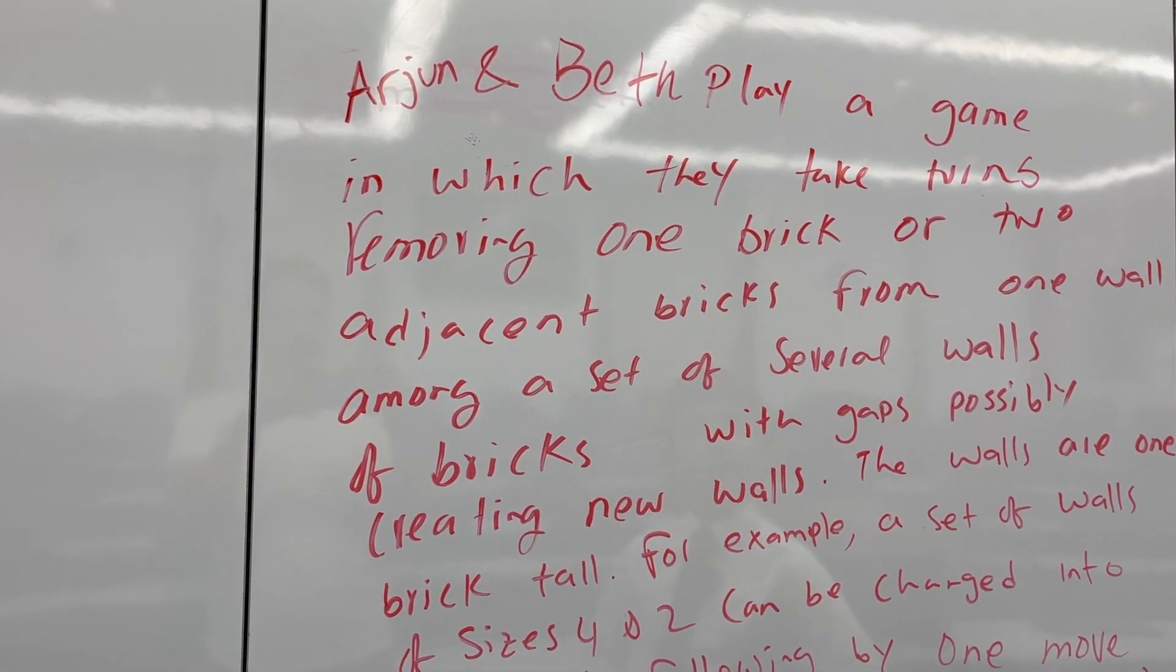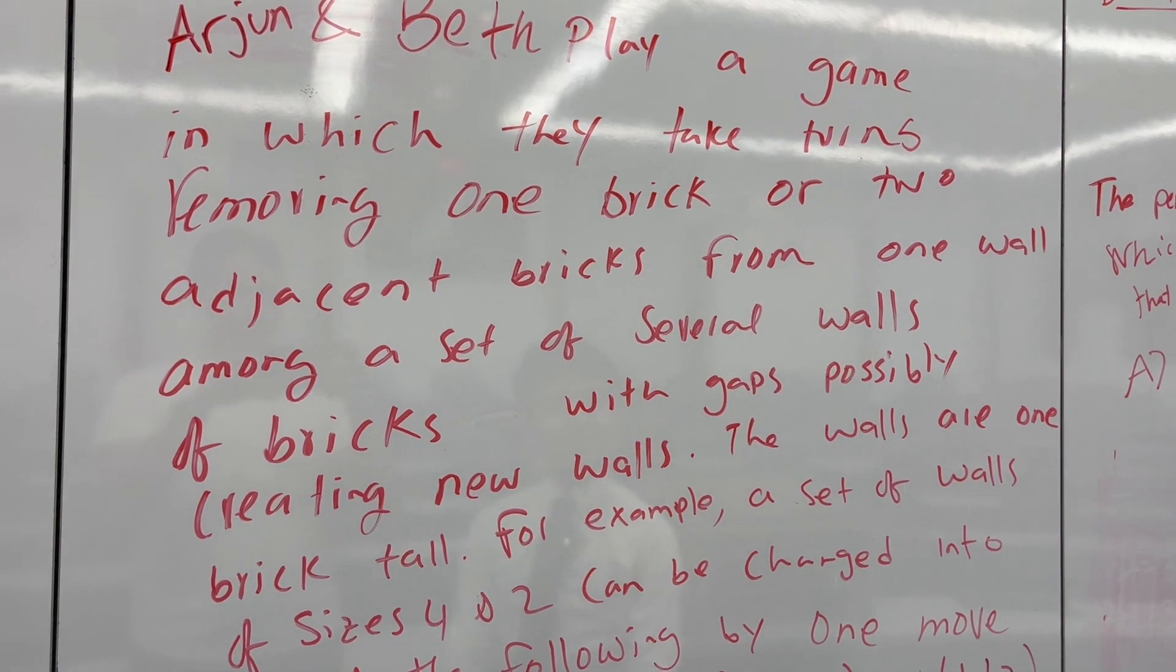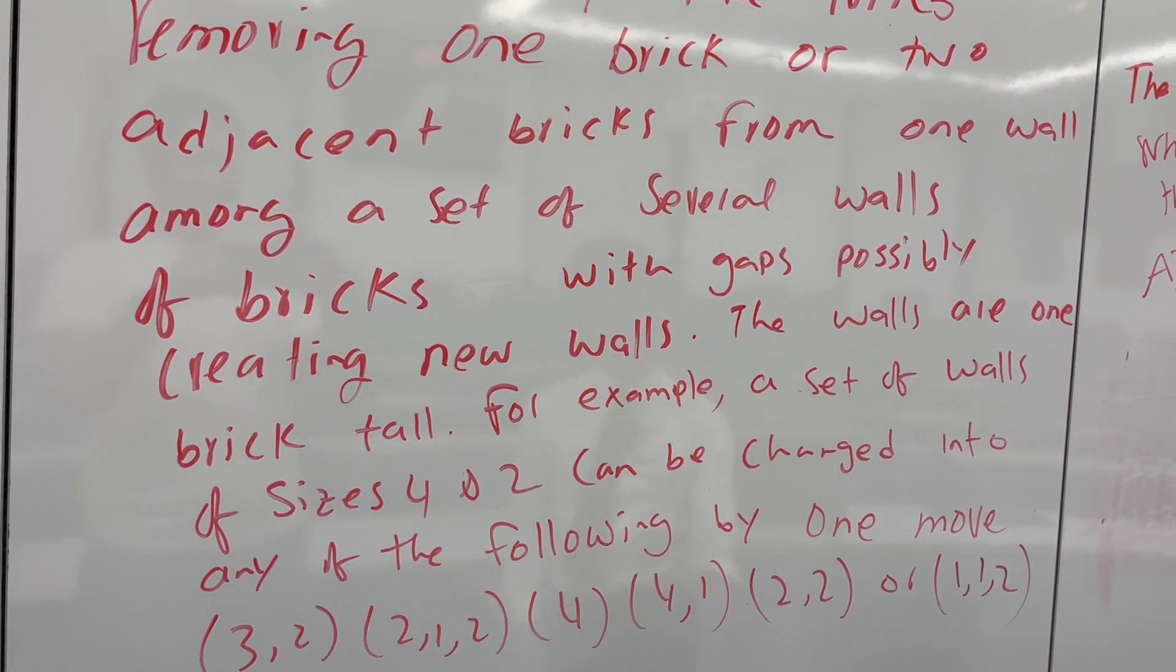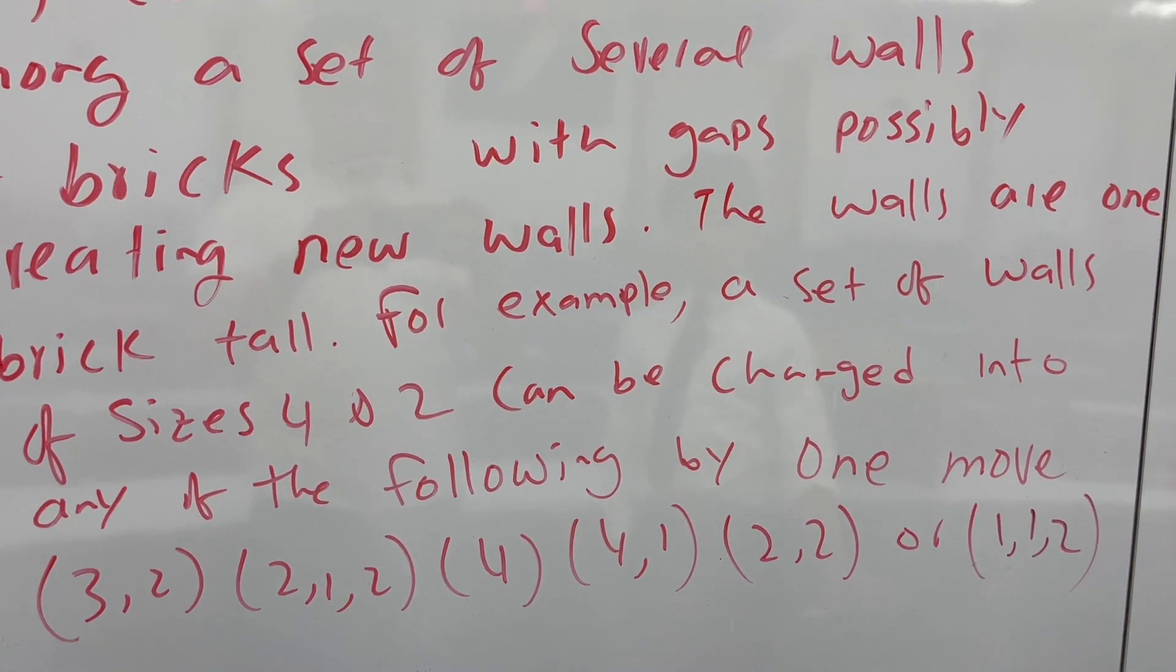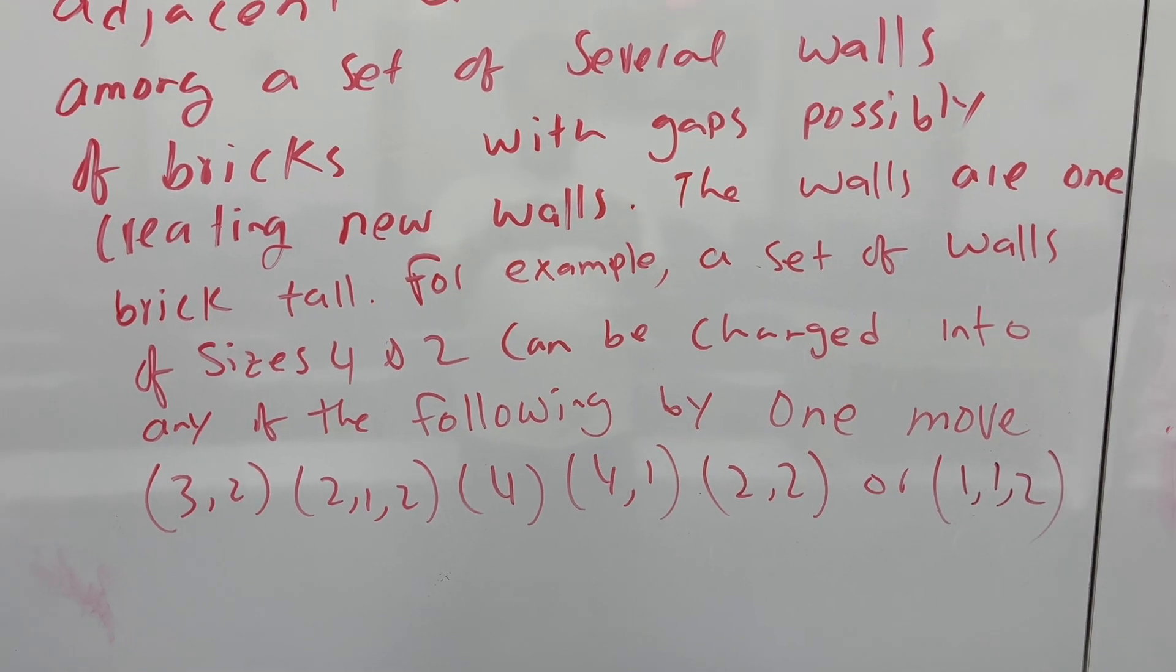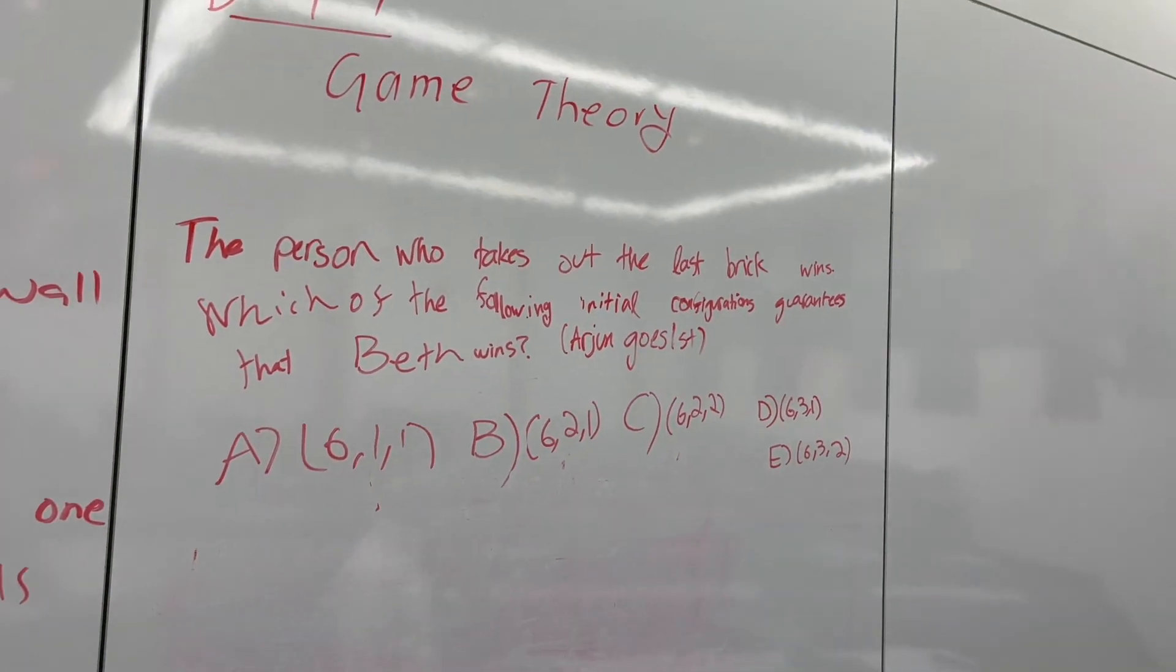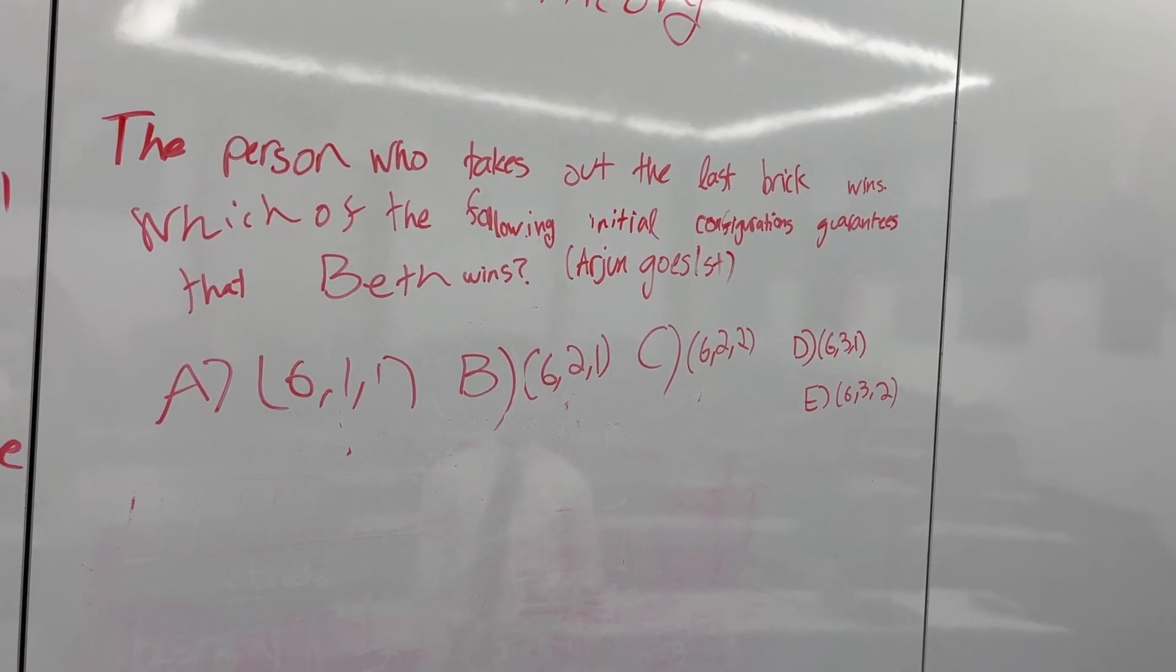Arjun and Beth play a game in which they take turns removing one brick or two adjacent bricks from one wall among a set of several walls of bricks with gaps, possibly creating new walls. The walls are one brick tall. For example, a set of walls of sizes 4 and 2 can be changed into any of the following with one move: 3-2, 2-1-2, 4-1, 4-1, 2-2, or 1-1-2. The person who takes out the last brick wins. Which of the following initial configurations guarantees Beth a win? Arjun goes first.